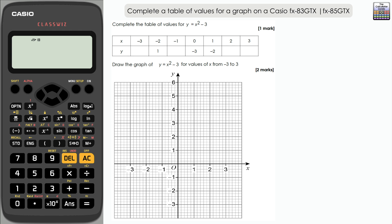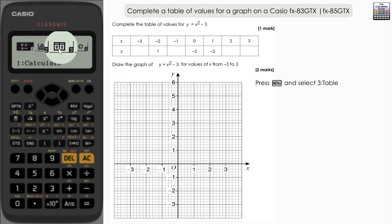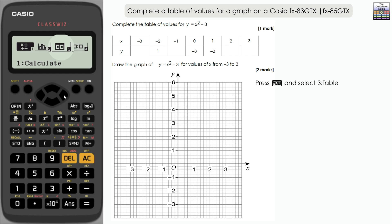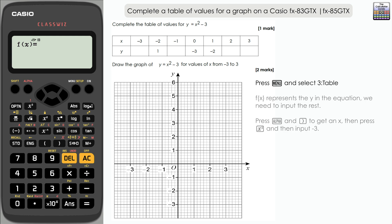Let's produce the table in the calculator. Press menu and then select three, four, table. This may be a different option on different models of calculator. Here we have fx, which is our function of x which represents the y here, so all we need to input is x squared minus three. In this case, to get an x on the fx-83 or 85GTX, press alpha and then right bracket, and that gives us an x squared, and then minus three.